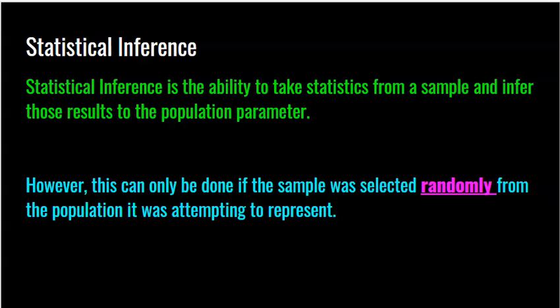Statistical inference is the ability to take statistics from a sample and infer those results to the population parameter. The whole idea is that we have this population mean, mu, that we don't know. But we look at a sample, and from that sample we get a sample mean, x-bar. As long as that sample is randomly selected from the population we're interested in, we should be able to use that sample statistic to infer what is true for the population.